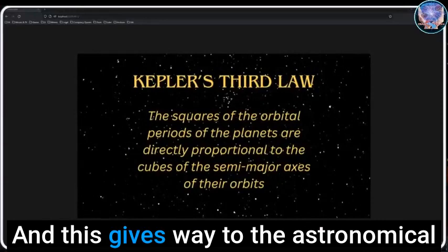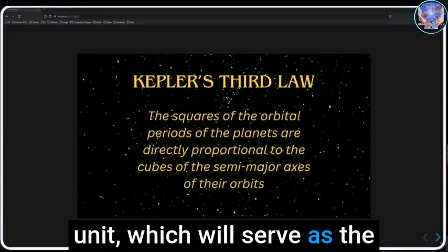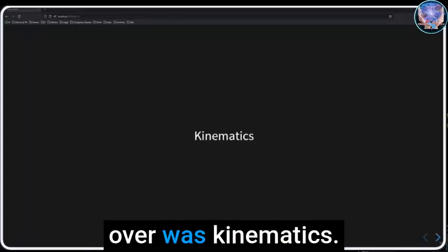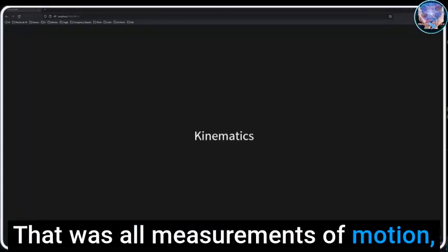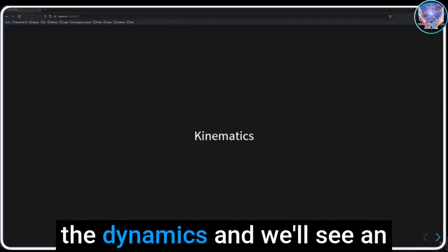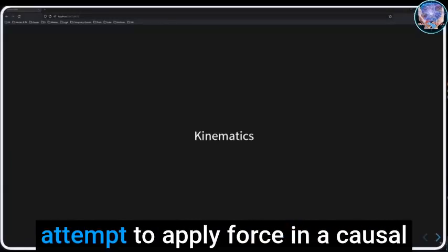We'll get into what all that means specifically as we move forward, but those are the laws there. This gives way to the astronomical unit, which will serve as the baseline for measuring everything out in the cosmos. Quick refresher: everything we went over was kinematics, that was all measurements of motion irrespective to causal mechanisms.